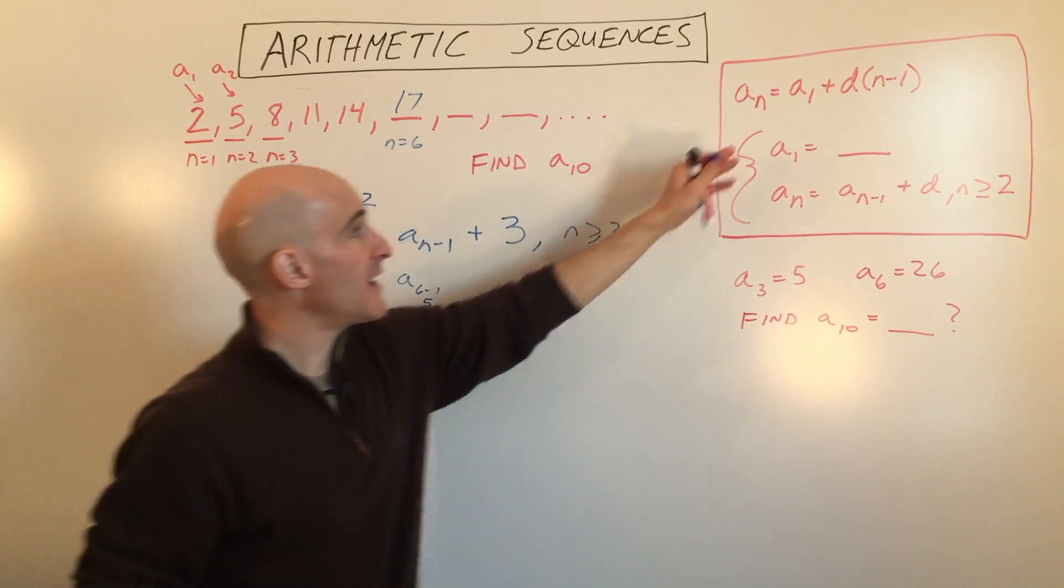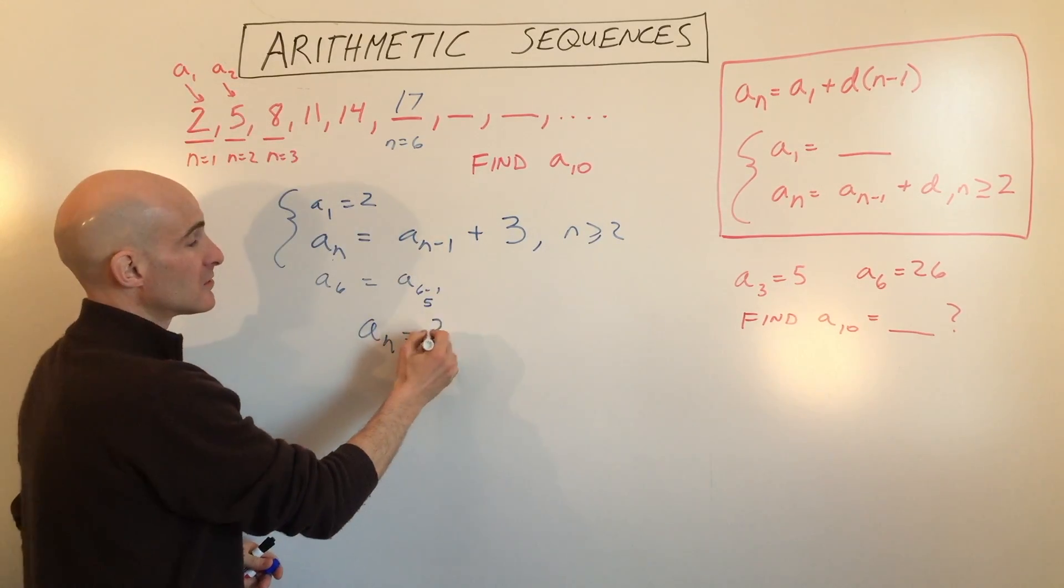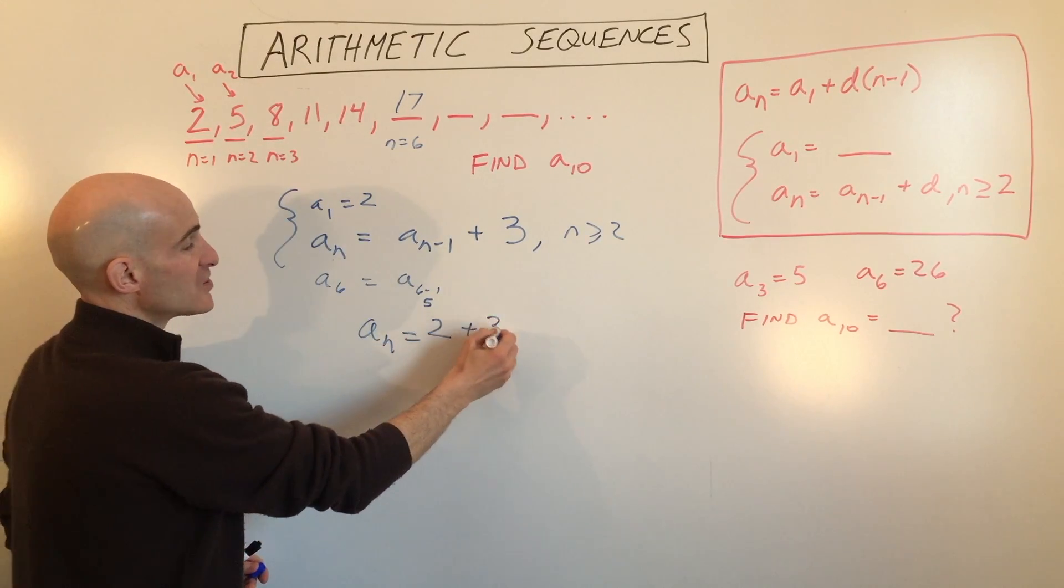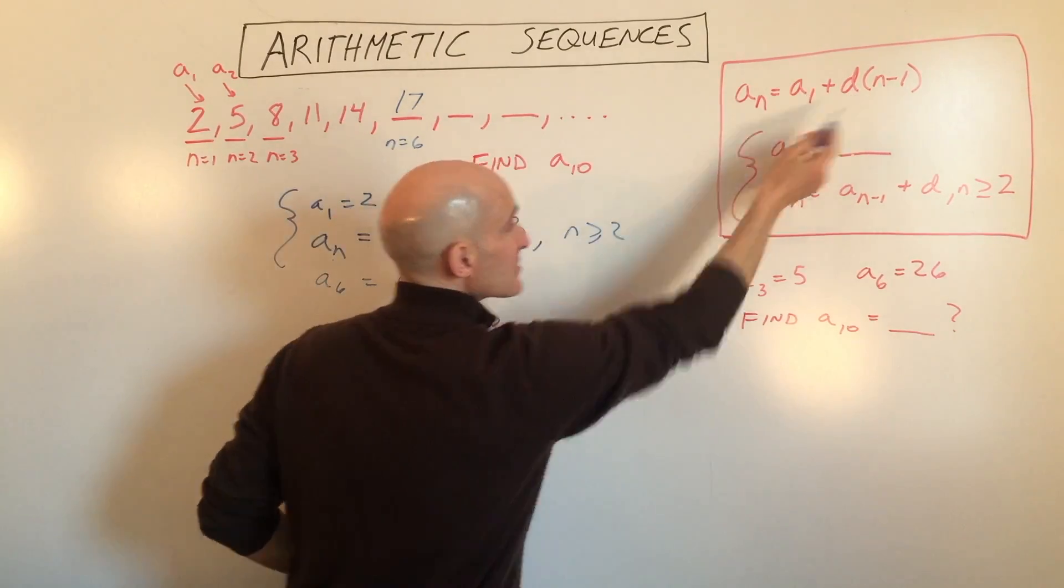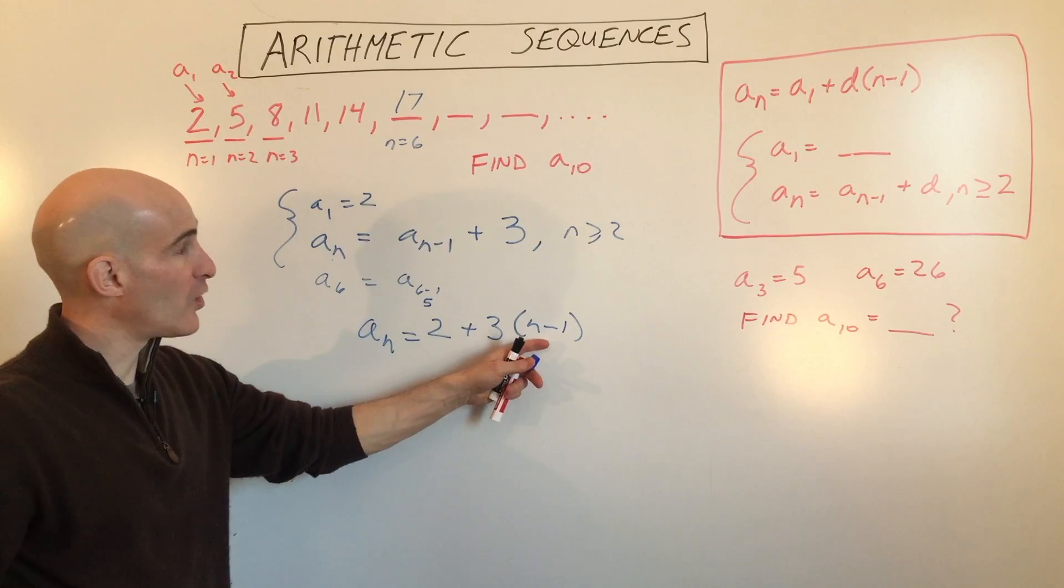So a sub 1 is the first term, so in this case, that's 2. Then we're adding 3 each time, that's d, the common difference, n minus 1 times. Now, why n minus 1?